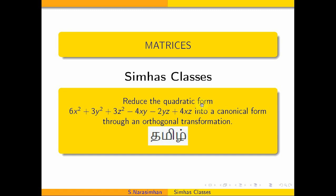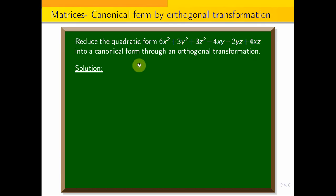Hi students, welcome to CMOS classes. Today we will reduce the quadratic form 6x² plus 3y² plus 3z² minus 4xy minus 2yz plus 4xz into a canonical form through an orthogonal transformation. This is the matrix formula.